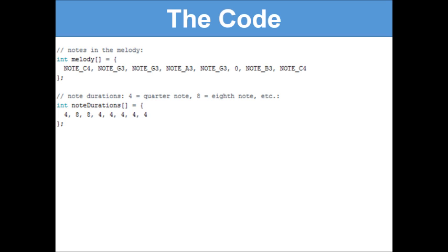And then next we are setting the note duration. So we're creating another integer variable, int noteDurations, and we are saying they are 4, 8, 8, 4, 4, 4, 4. Now you might be wondering what that means. Well, 4 is a quarter of a note, 8 is an eighth of a note, 2 is a half of a note.